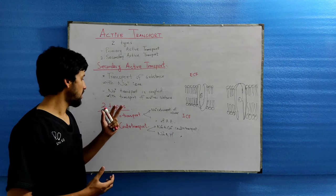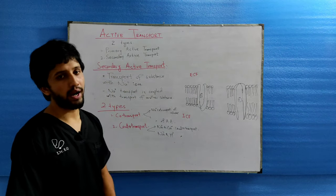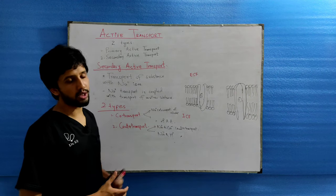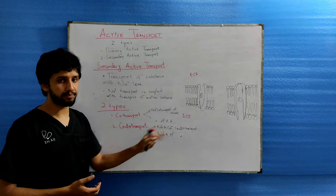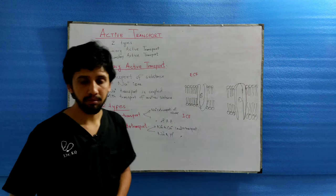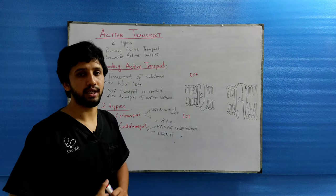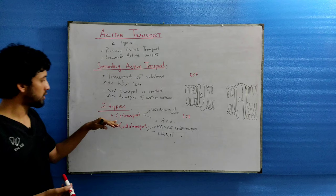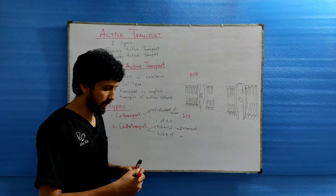Secondary active transport has two types: cotransport and countertransport. In cotransport, there is sodium cotransport of glucose and likewise sodium cotransport of amino acids. In the countertransport mechanism, there is sodium-calcium countertransport, which is present in every cell, and sodium-hydrogen countertransport, which occurs in the renal tubules.